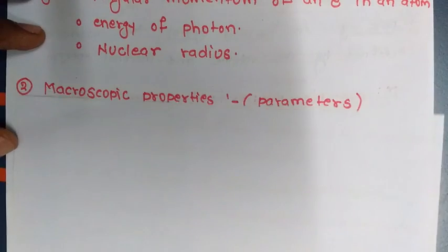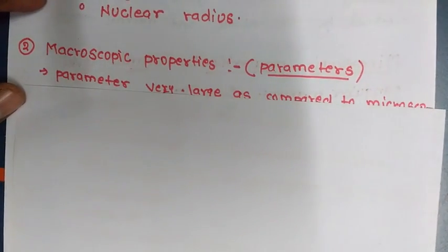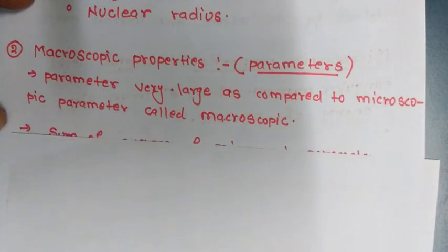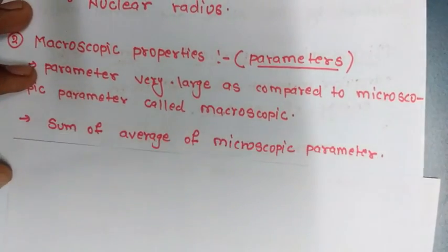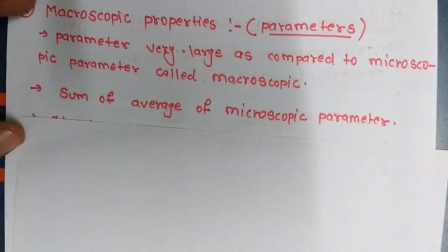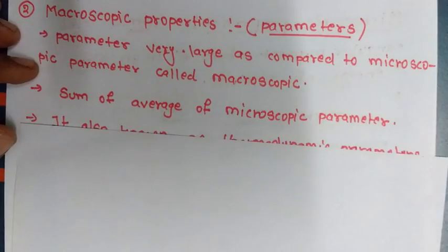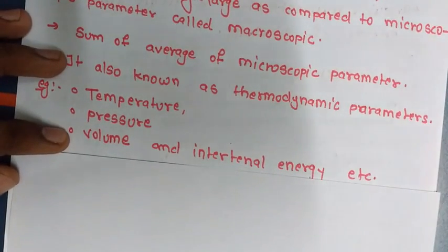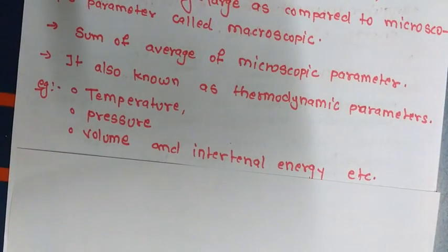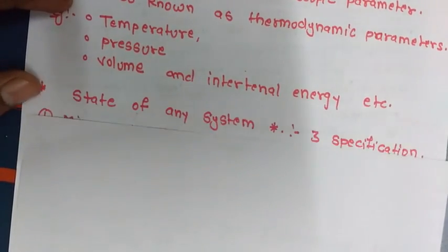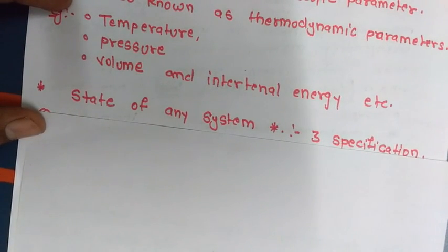Now let's talk about the macroscopic parameters. As we know, 'macro' means bigger, so the parameters which are very large as compared to the microscopic parameters are called the macroscopic parameters. These macroscopic parameters are the average of the sum of the microscopic parameters. Sometimes these macroscopic parameters are called the thermodynamic parameters — for example, temperature, pressure, volume, and internal energy.